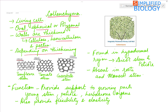Lamellar means plate-like thickening; example, sunflower stem. Angular — the thickenings are present at the angles; seen in tomato stem. And the third is Lacunar, meaning the thickening is present in the intercellular spaces; seen in Cucurbita stem.